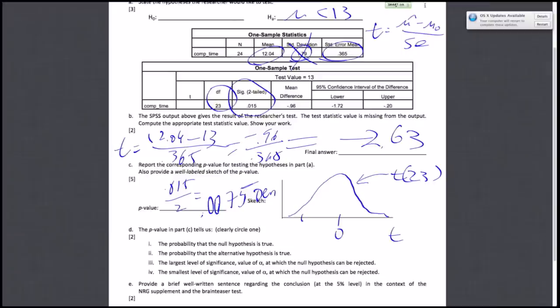Lastly, do some shading. Your t-statistic is negative, so it's to the left of 0 at negative 2.63. You want to shade everything to the right and label this p-value. That's it for this question.